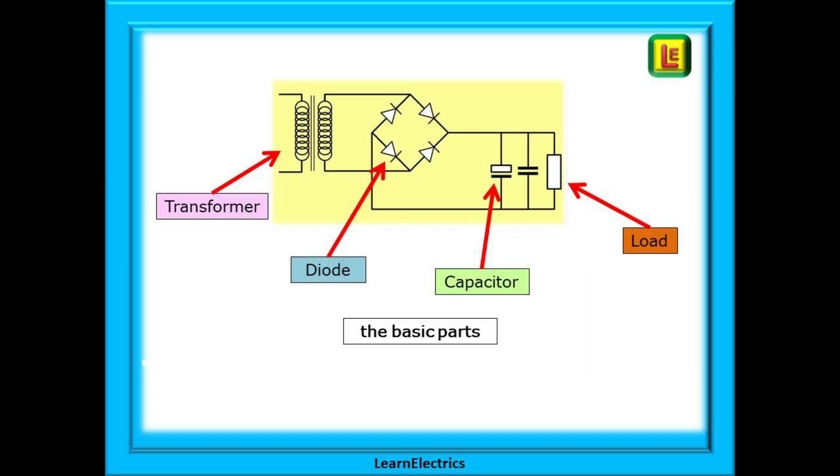We will start with a transformer and this will reduce the supply voltage down to a value close to the actual voltage required. This reduced voltage will then pass through a diode assembly to convert the AC alternating current into a direct current. This then needs to be smoothed so that the DC output is at a constant level and we will use capacitors for this.